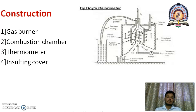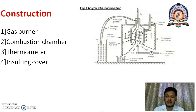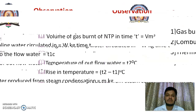The working of Boyce gas calorimeter is very simple. Start the burning of the gaseous fuel at suitable pressure and adjust the rate of water flow such that the temperature of outgoing water remains constant, and the following observations are recorded.